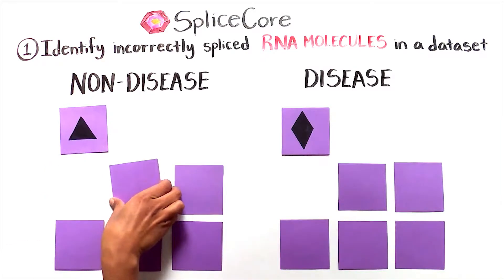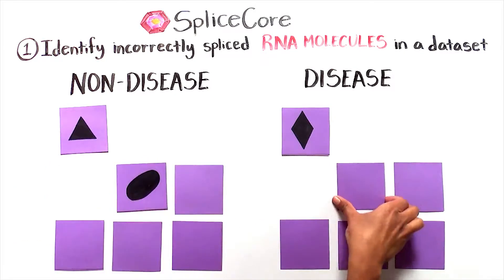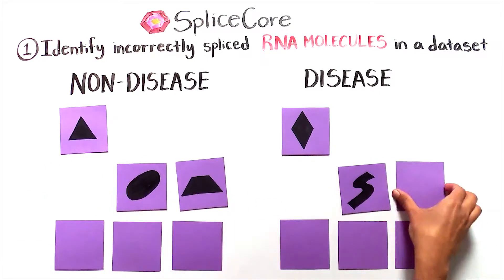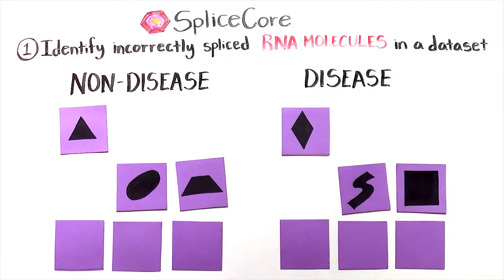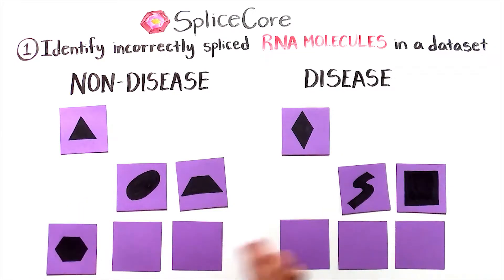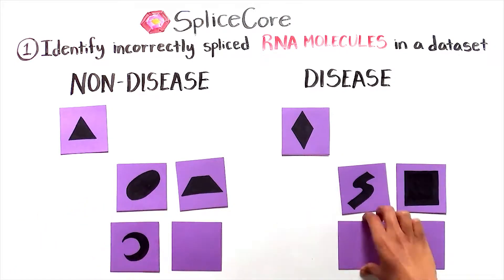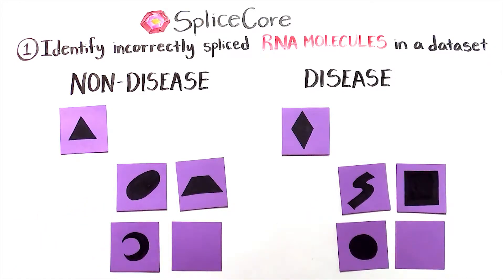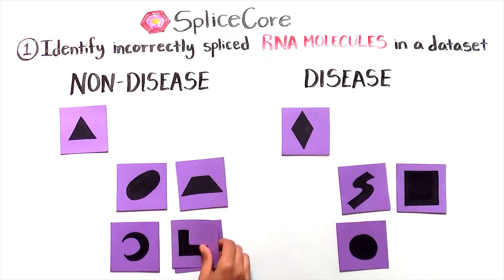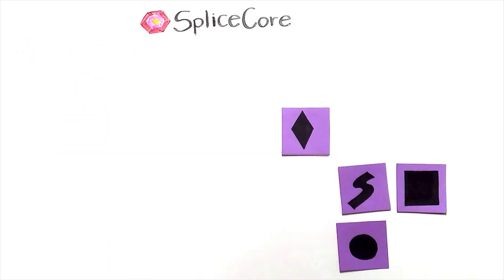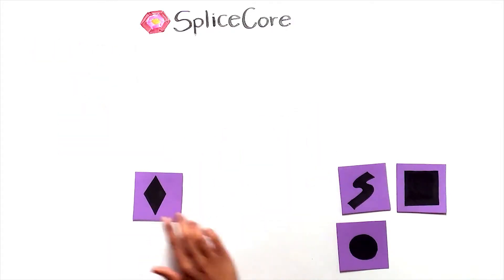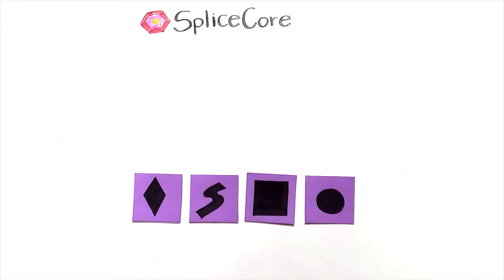Cards that match represent correctly spliced RNA molecules and are removed from the processing pipeline. Cards that do not match represent RNA molecules that may be incorrectly spliced, and thus are potential therapeutic targets. These incorrectly spliced RNAs move to the next step of processing.